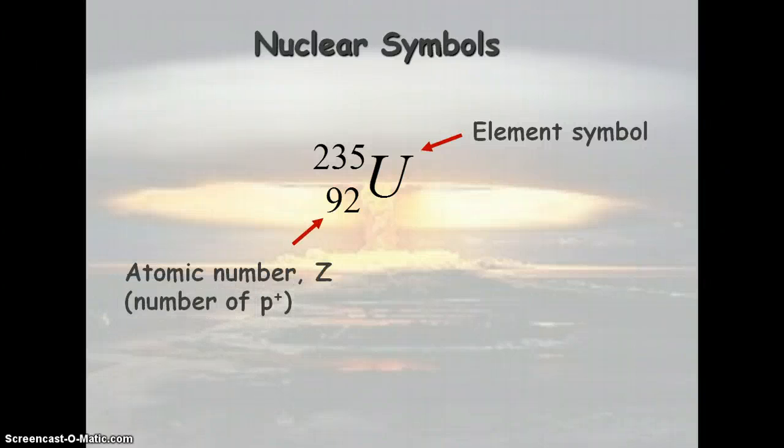The bottom number, the lower number, is your atomic number, which is also the same number of protons in your nucleus. The atomic number on the periodic table would be the top number.